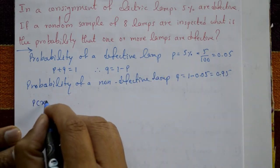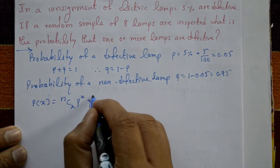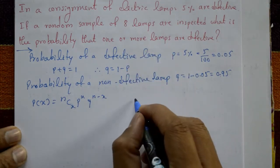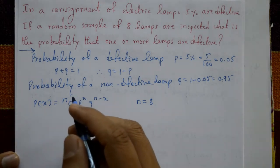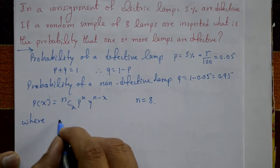This is a binomial distribution. P of X is equal to nCx times P raised to X times Q raised to n minus X. Total number of lamps is 8, means n is equal to 8.